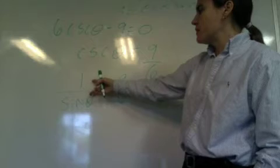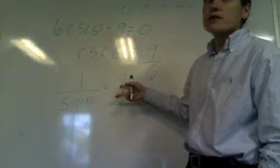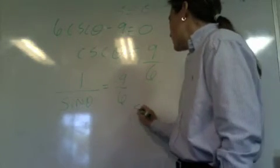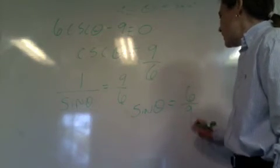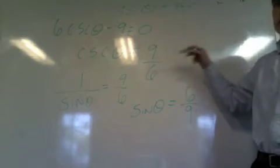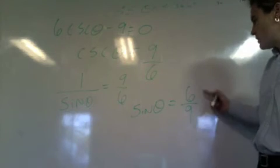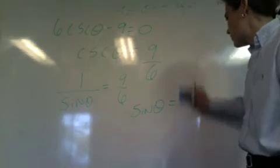If I want to get sine in the numerator, I can just flip both sides and say, well, then the sine of theta equals 6/9. And now we solve it just like we did the other problems. Can we reduce 6/9? Yeah, 2/3.